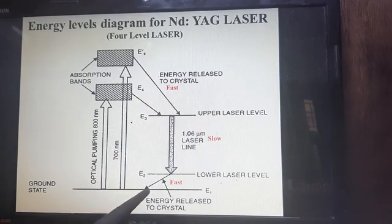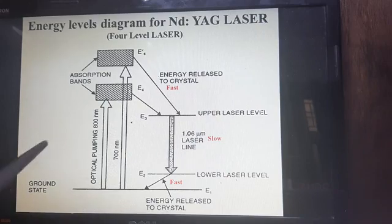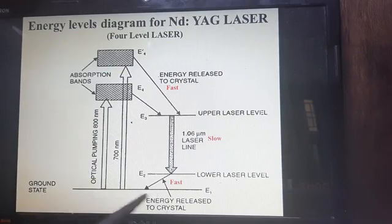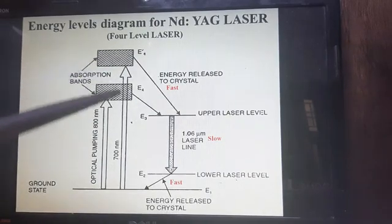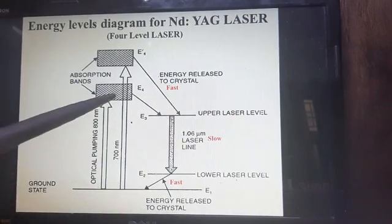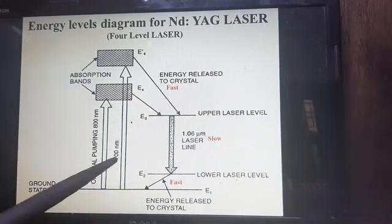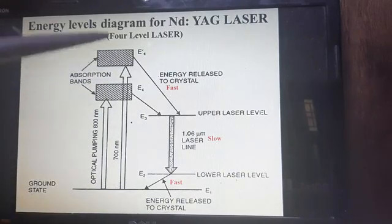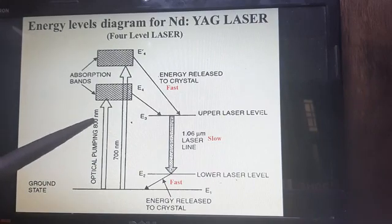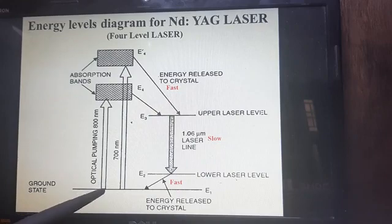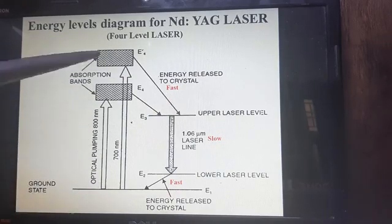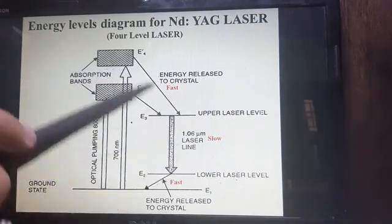Initially, all Neodymium Nd³⁺ ions — the mobile ions which jump from the ground state to a higher state — are pumped with energy so they jump to the excited states E4 and E4'. Both E4 and E4' are excited states; they are two components of the E4 level. A wavelength of 700 nm is required to reach one excited state, and 800 nm is required to reach the other. This is the absorption part.